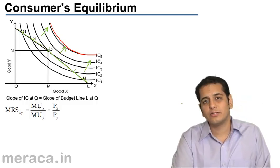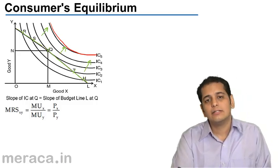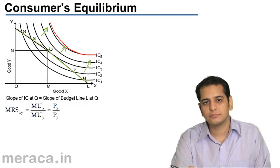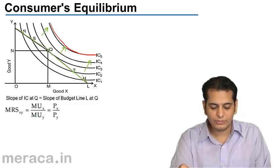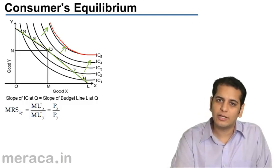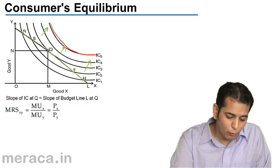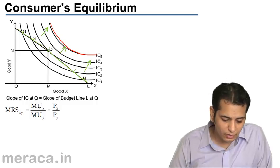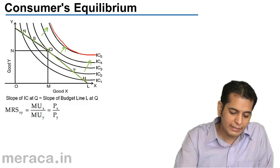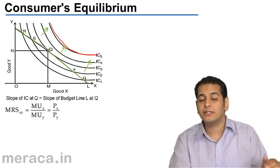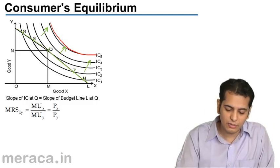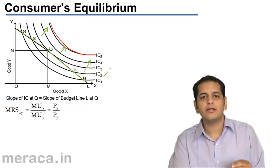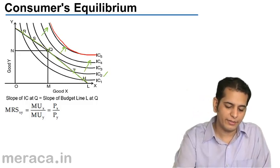Now let's take these points one by one. Point R lies on the budget line and also on IC1. Similarly, point H lies on the budget line and also on indifference curve IC1. These two points will give the same level of satisfaction. But if we take a close look, we can see that there is point S which is also on the budget line but lies on the higher indifference curve IC2. So it is sure to give a higher satisfaction than point R and point H.